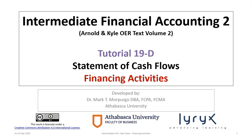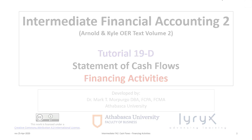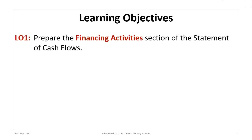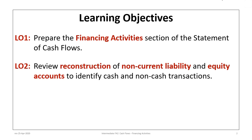Welcome to Intermediate Financial Accounting 2, Tutorial 19d. This is the fourth in a series of tutorials related to the preparation of the cash flow statement or statement of cash flows. This tutorial looks at preparation of the financing activity section and has two main learning objectives: first, to prepare the financing activity section of the statement of cash flows, and second, to review the reconstruction of non-current liability and equity accounts to identify cash and non-cash transactions.